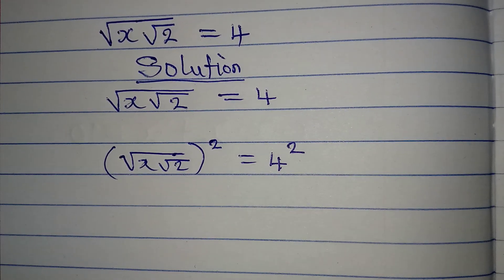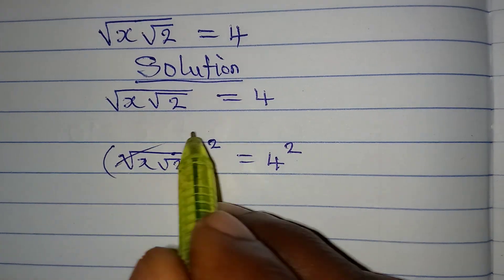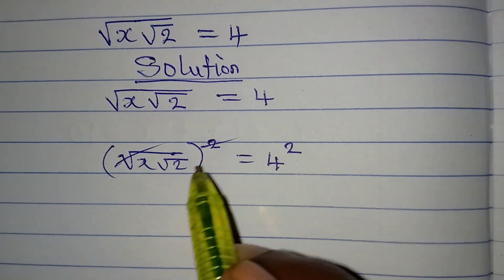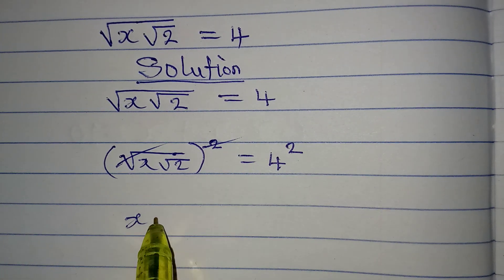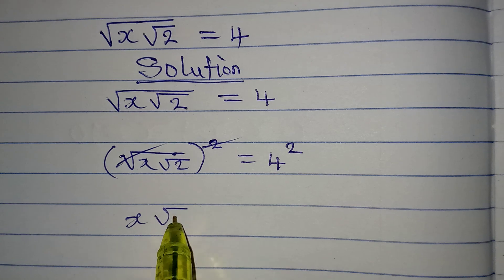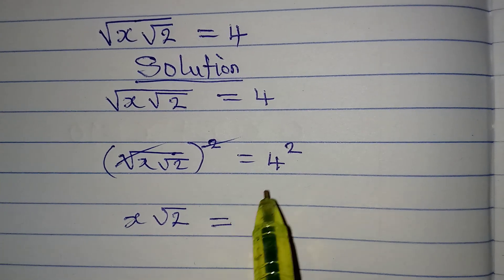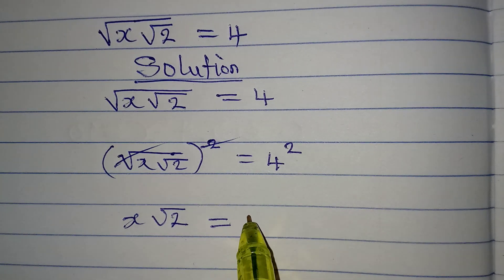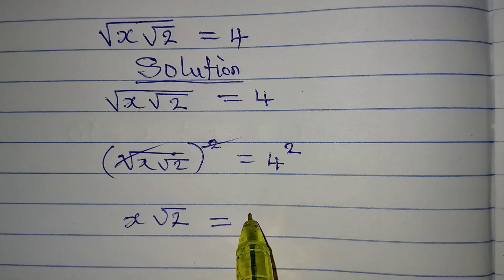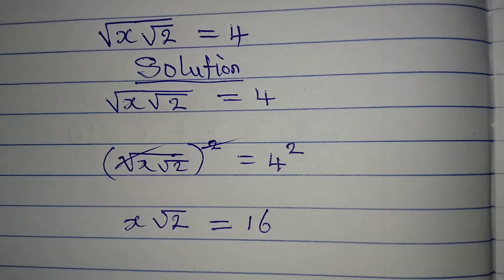This and this will cancel each other, so that x root 2 will be equal to 4 squared, and 4 squared is 16, not 8.